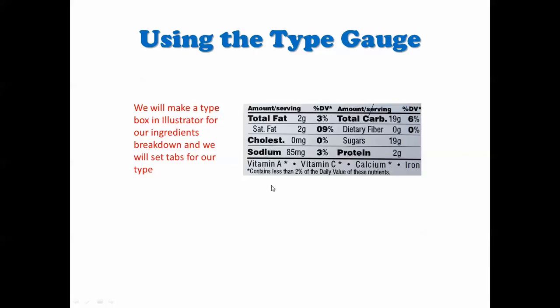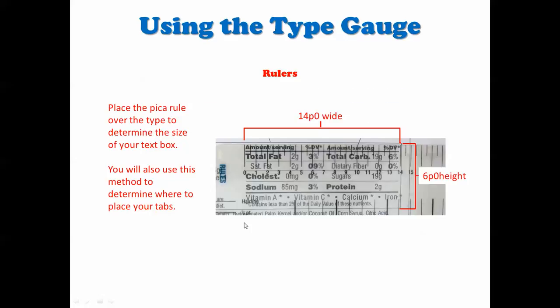Okay, the next thing we're going to do is we're going to set this block of type, but we have to set it in a type box to do this. So we have to figure out what the size is. So we're going to put the pica ruler over this and measure this.